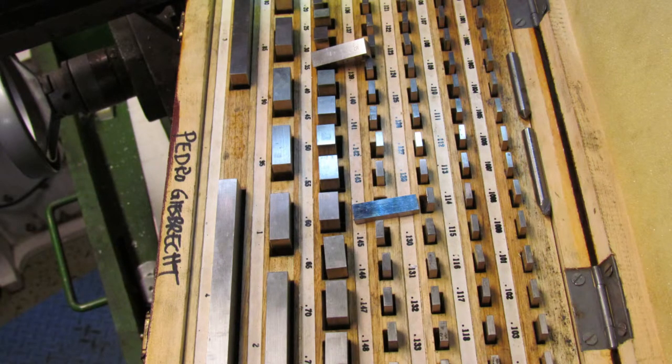The gauge blocks that I have are going on 20 years old. I paid about $150 on sale for an 81 piece set back then. Now most imported sets seem to be around the $225 mark when I see them on sale.